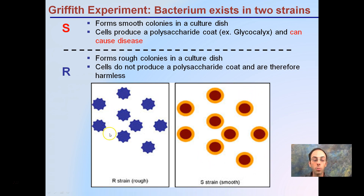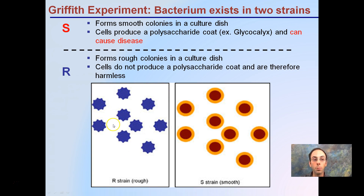The R strain is harmless and non-virulent — animals can survive just fine with it. The S strain, marked in red, can cause disease and must be watched out for.